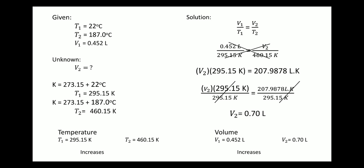Analyzing: T1 increased from 295.15 to 460.15 Kelvin. And for volume, it increased from 0.452 liter to 0.70 liter. So as the temperature increases, the volume also increases.